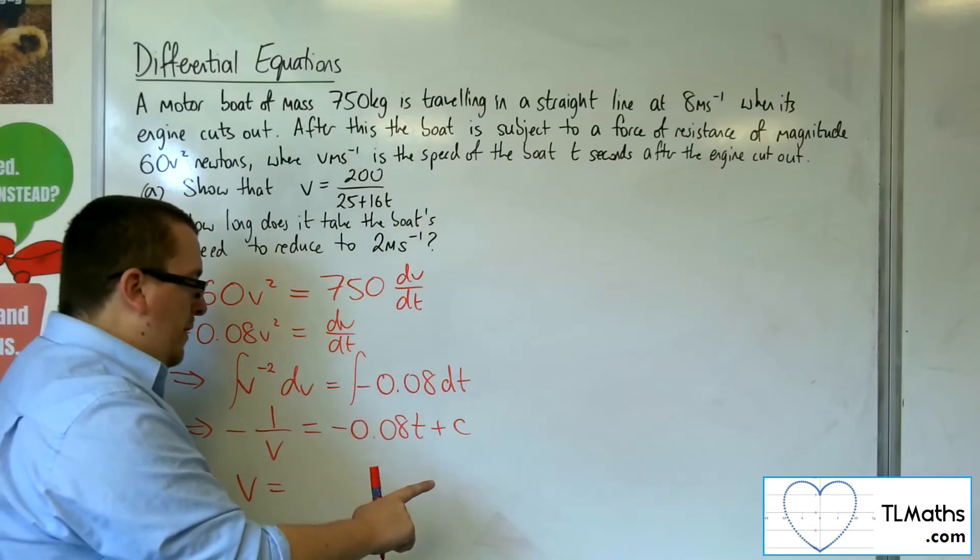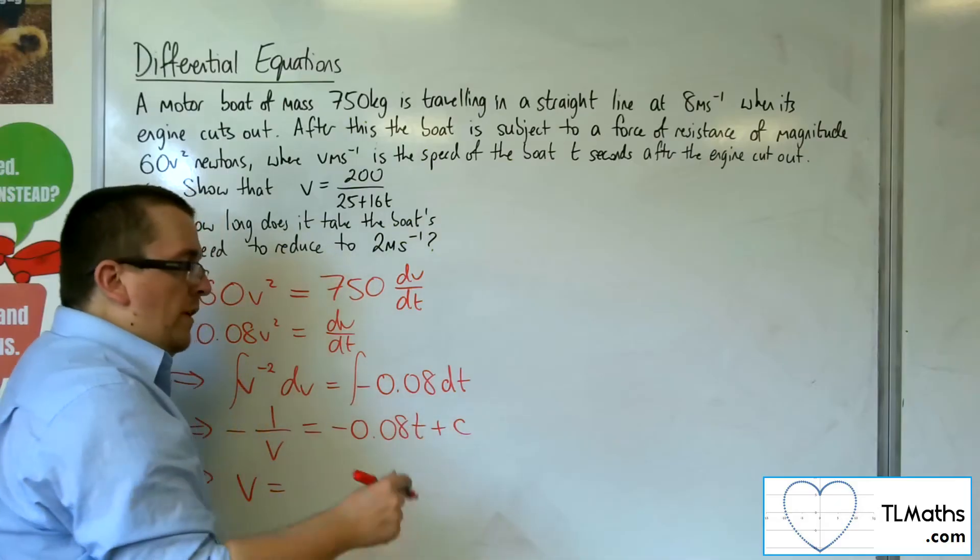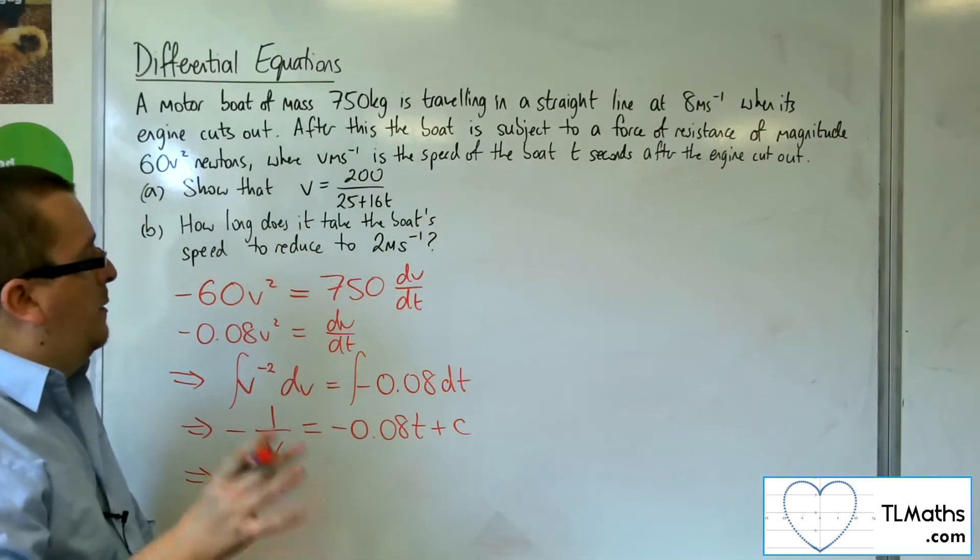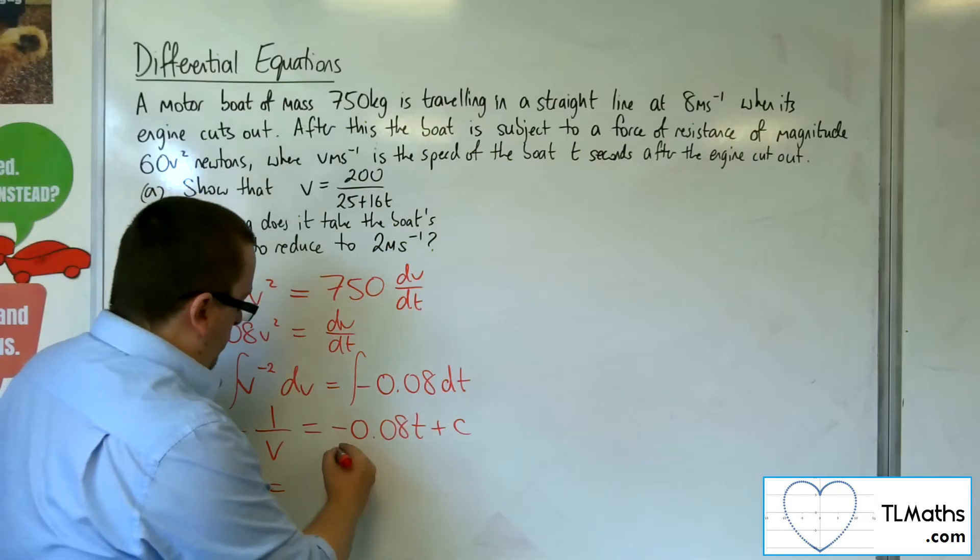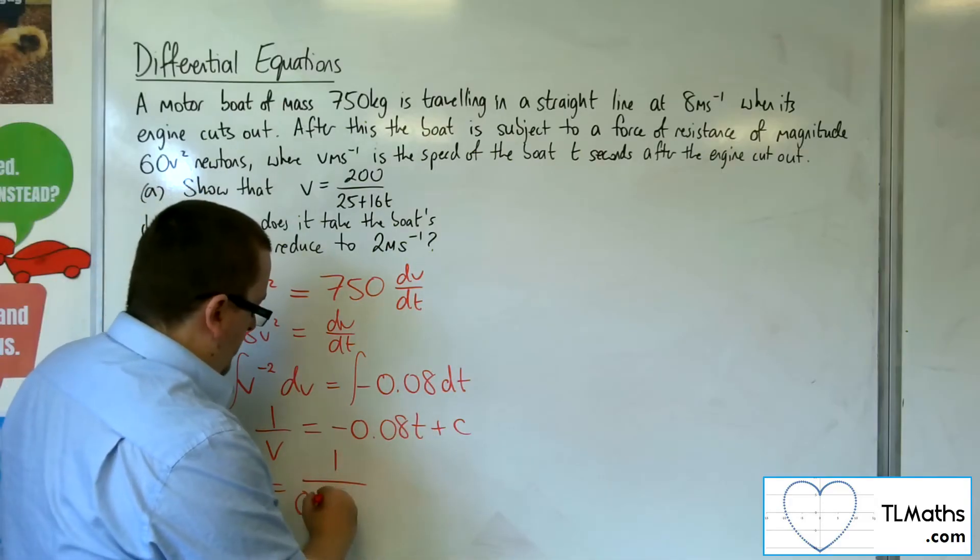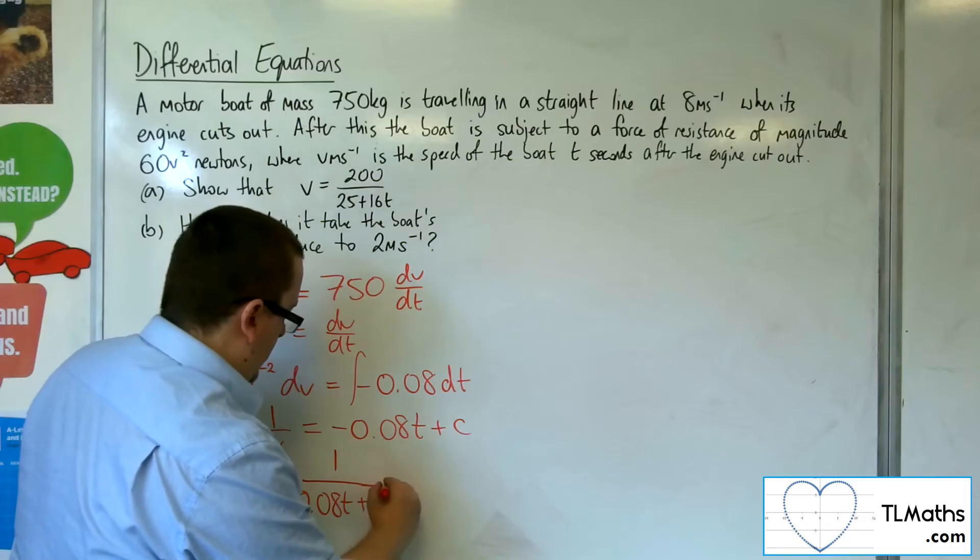Now, through multiplying through by minus 1, I'm going to change this. Rather than writing it as minus C, I'm going to write it as plus A. So I'm going to change the constant. So I'm going to have 1 over 0.08T plus some constant A.